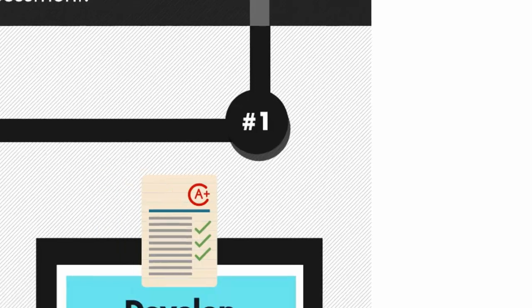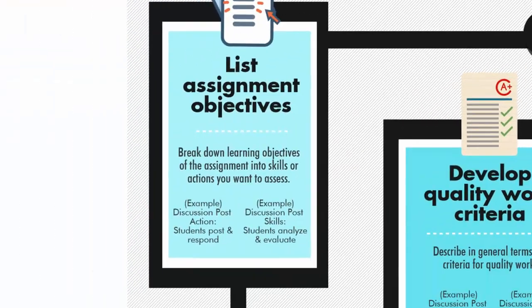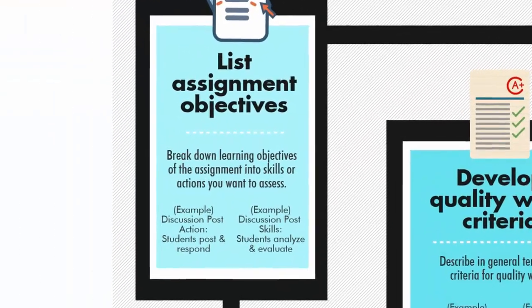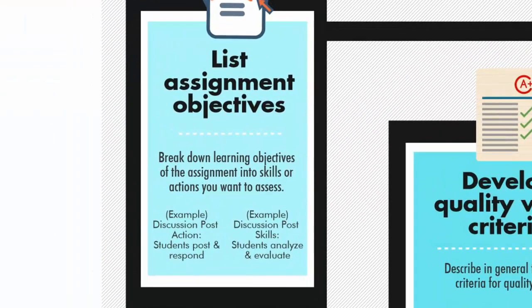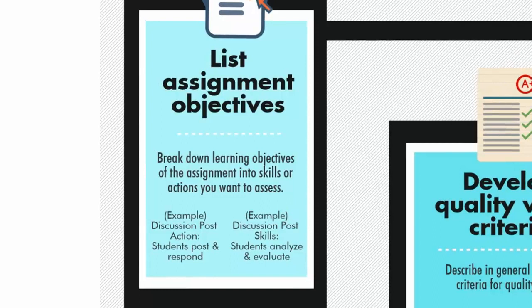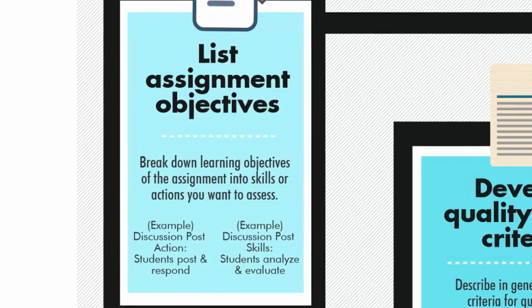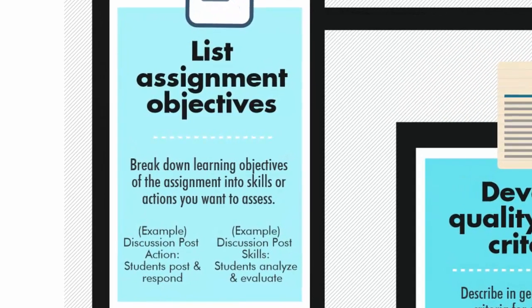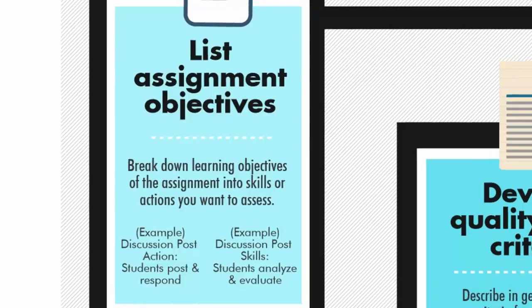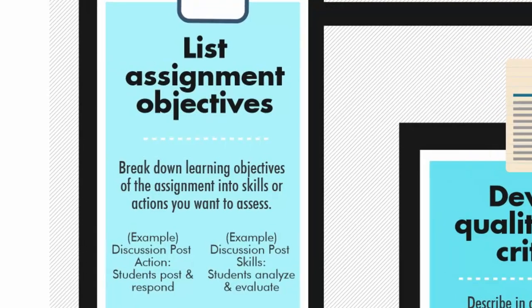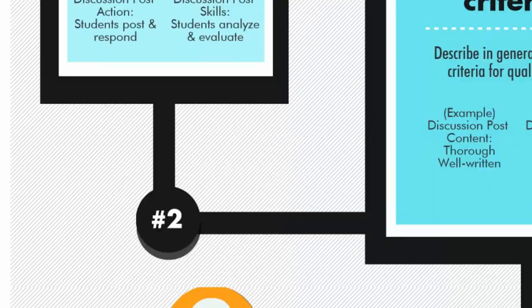Step 1: List Assignment Objectives. Break down the learning objectives of the assignment into skills or actions you want to assess. For example, for a Discussion Post the action is that students post and respond, and the skills are that students analyze and evaluate.